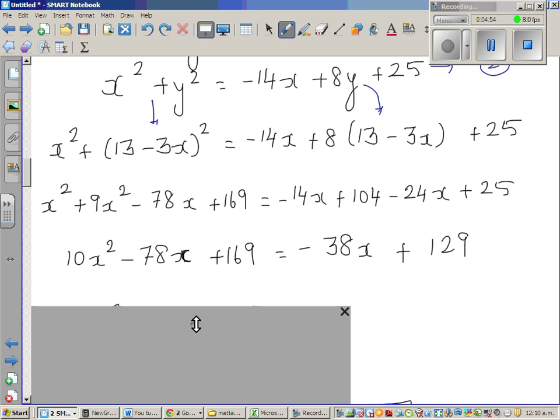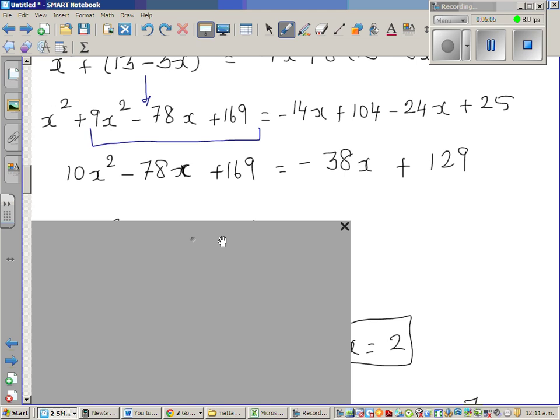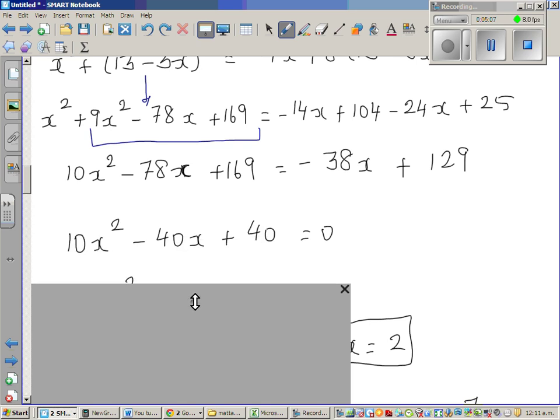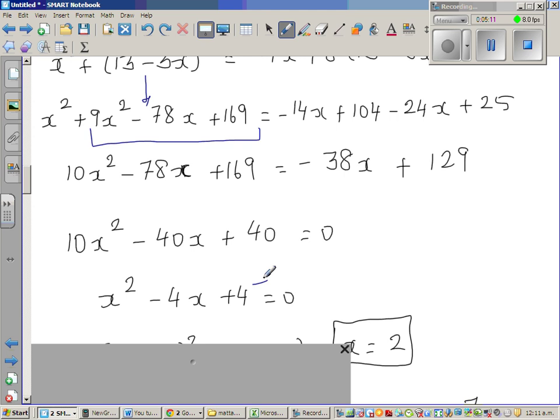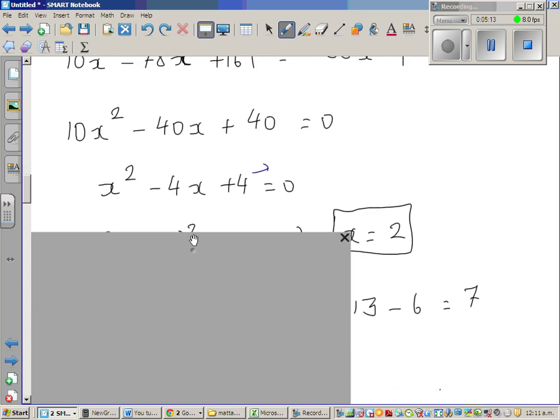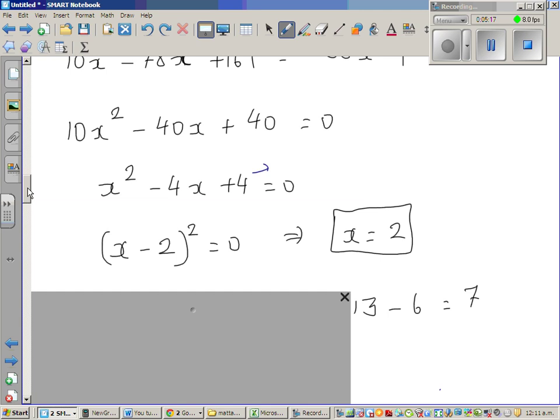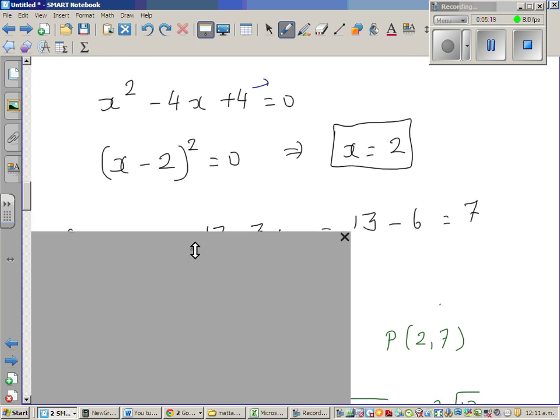It simplifies to this. 8 times 13 is 104. This is expansion of this. And making it a quadratic equation, you come to this. And this is a perfect square of (x-2)². And this implies x is equal to 2. And if x is equal to 2, you know y is 13 minus 3x.